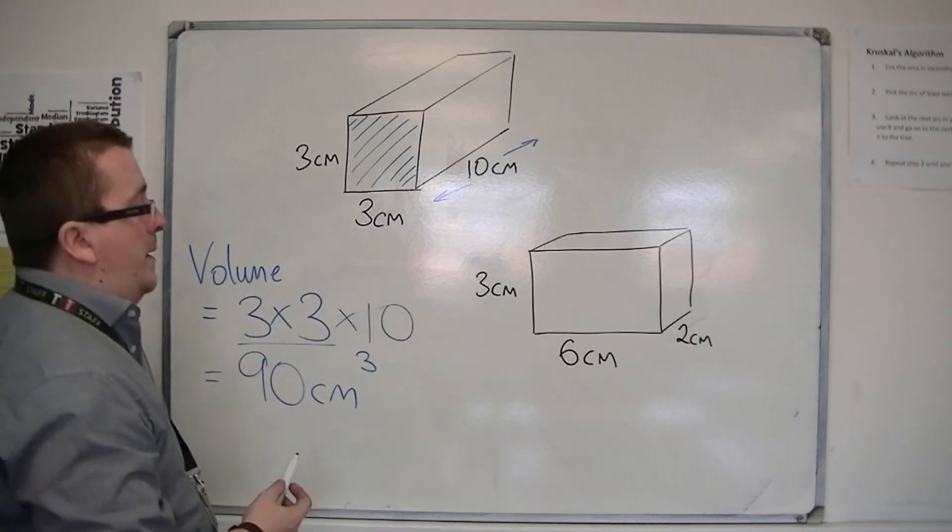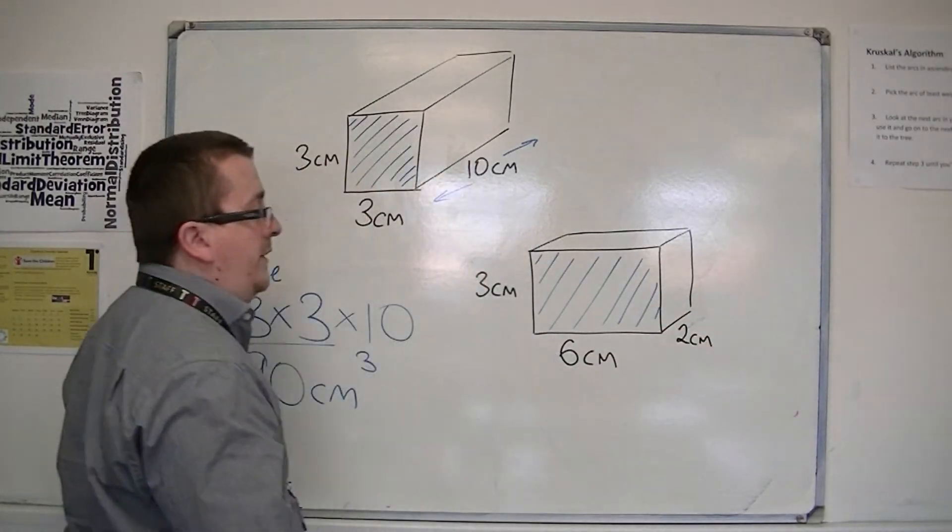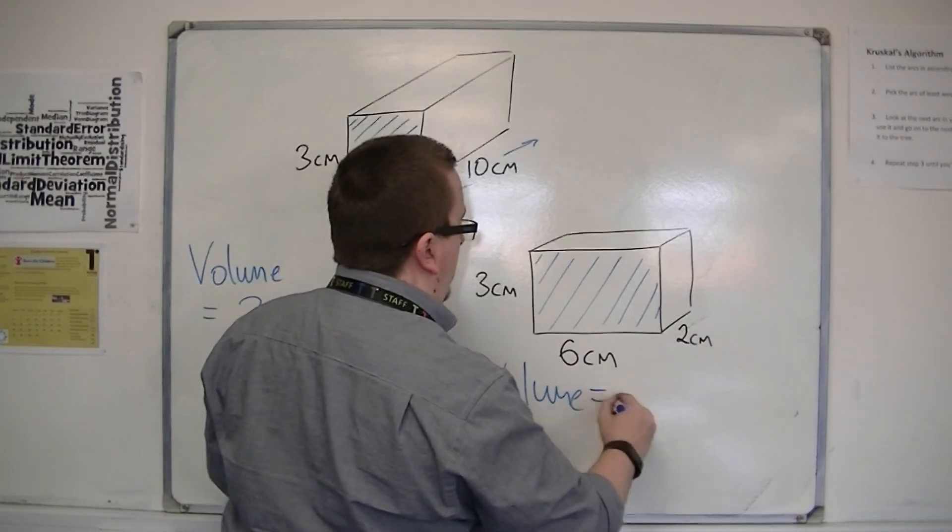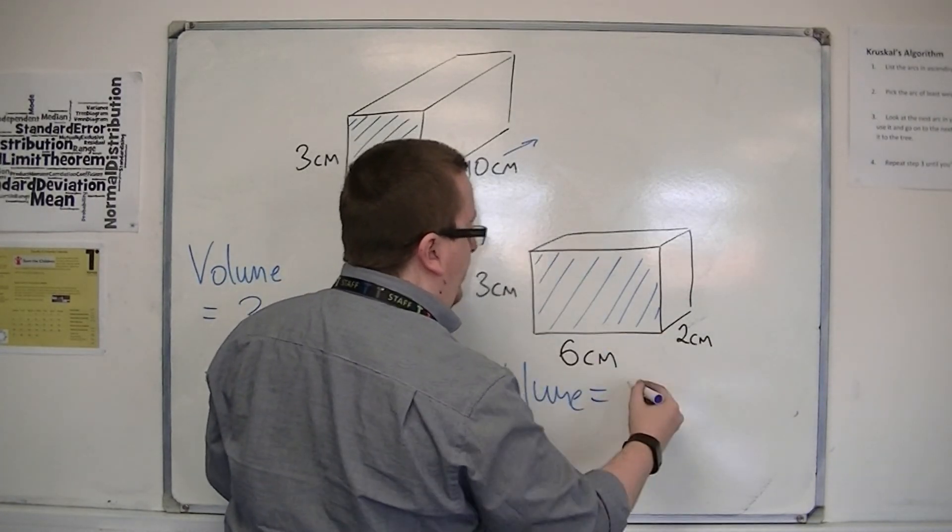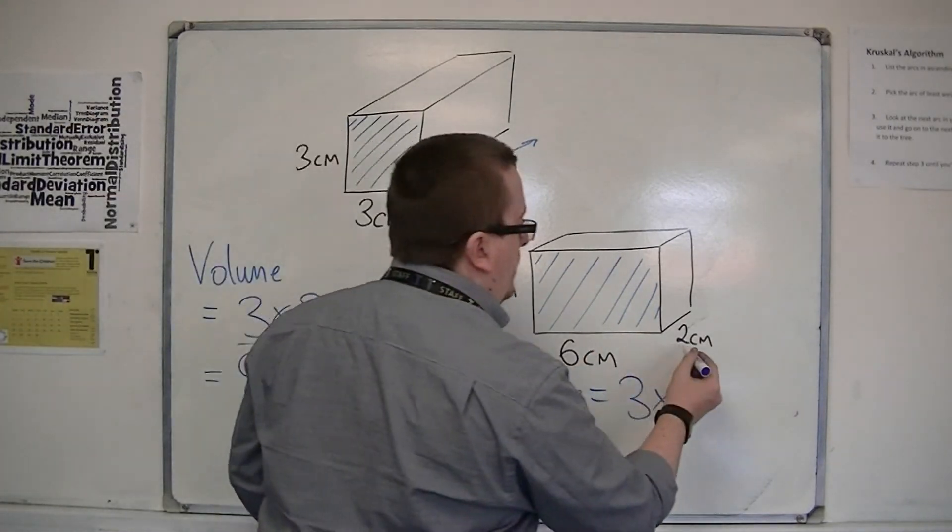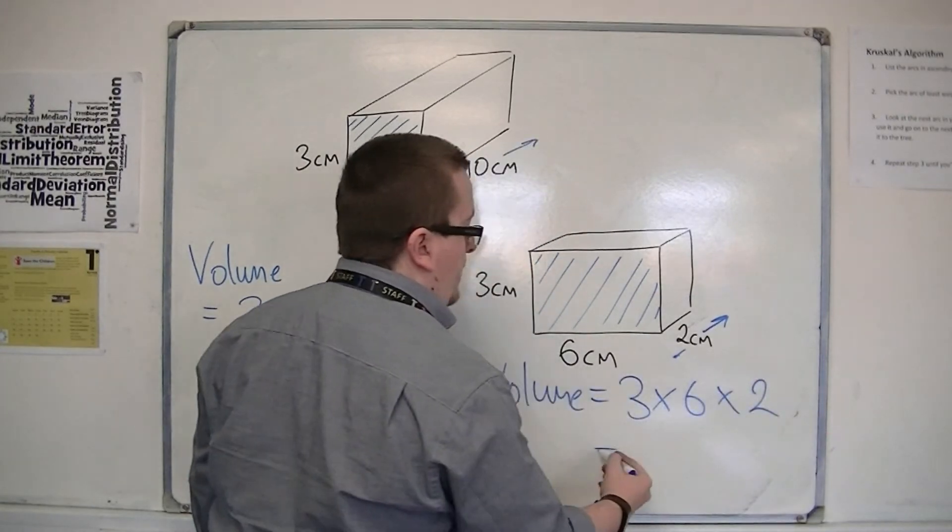For this shape here, for this cuboid, first of all, work out the area of the front face. So the volume in this case is three times six, that's the area of that rectangle, and then you multiply it by the depth of the shape. So multiply it by two in this case.